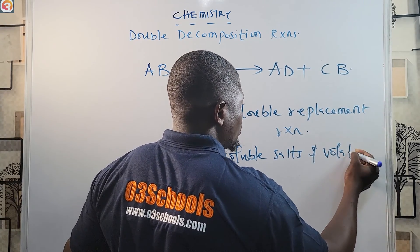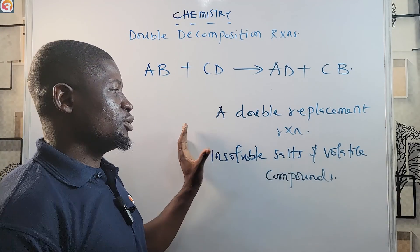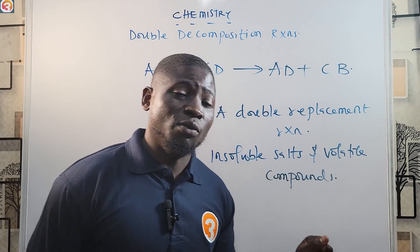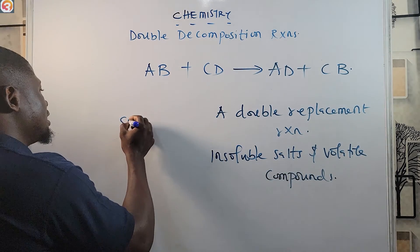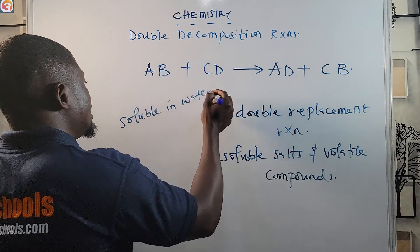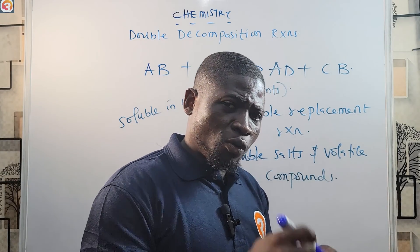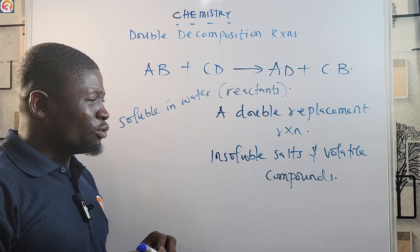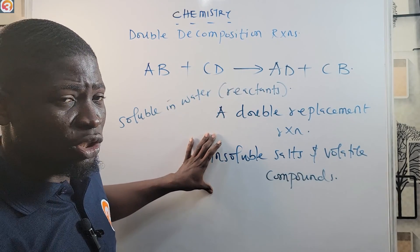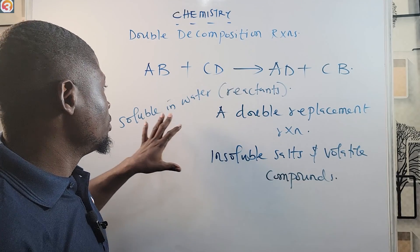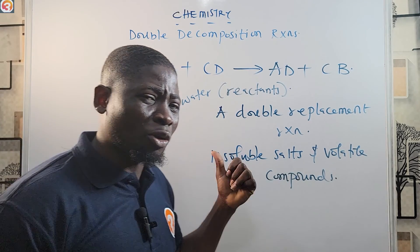A double replacement reaction, also called a double decomposition reaction, is very useful in preparing insoluble salts and volatile compounds. Please note that double decomposition reactions are very useful in preparing insoluble salts and volatile water compounds. We actually discussed this when we talked about acids, bases, and salts in a previous topic.